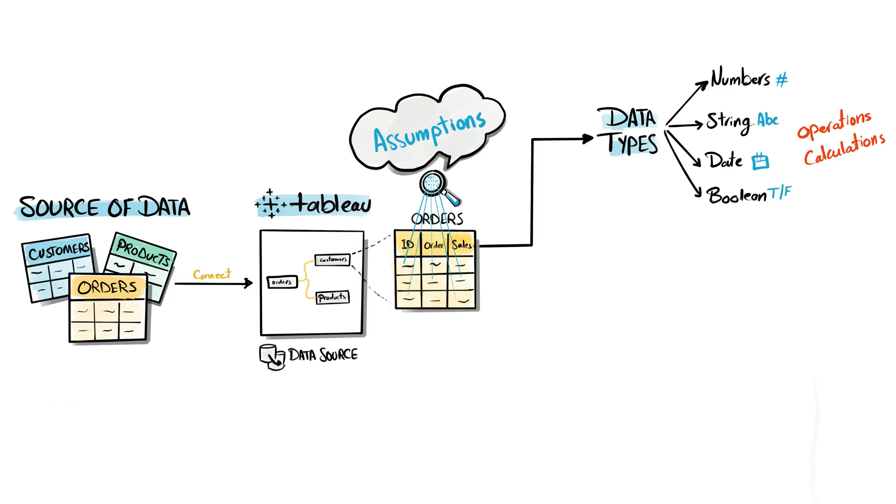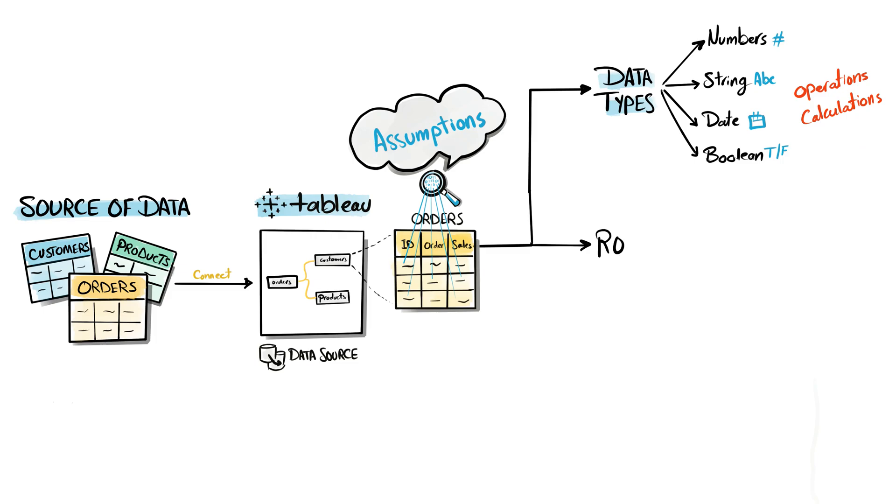And one more thing that Tableau is going to do is assign each field to a role. These roles are going to help Tableau build the visualizations. So the first set of roles we have are dimensions and measures. Dimension fields define the level of detail of the view, and the fields with the role measure are going to be used for aggregations in the view.